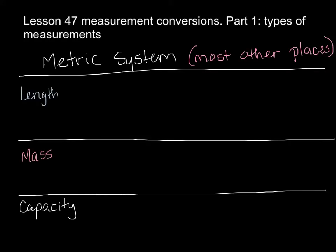Let's start with what these measurement systems are. We're going to focus on two types of measurement systems today. The metric system is the type of measurements that most other places, most other countries use — Europe, China, they probably use the metric system. We generally don't use it, but we should be familiar with it, so we're going to get ourselves familiar with it.